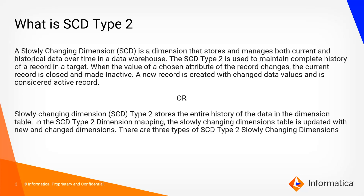SCD stands for Slowly Changing Dimension, which stores and manages both current and historical data over time in a data warehouse system. SCD Type 2 is used to maintain a complete history of a record in a target. When the value of a chosen attribute changes, the current record is closed and made inactive, and a new record is created with the changed data values and considered the active record.